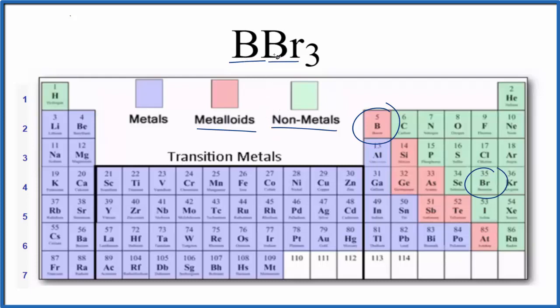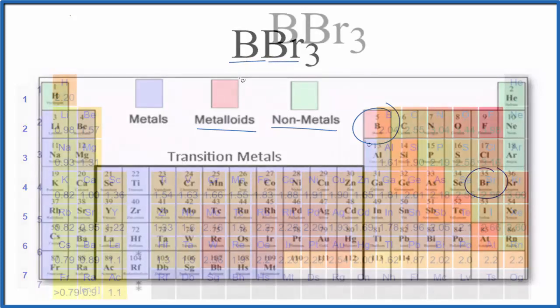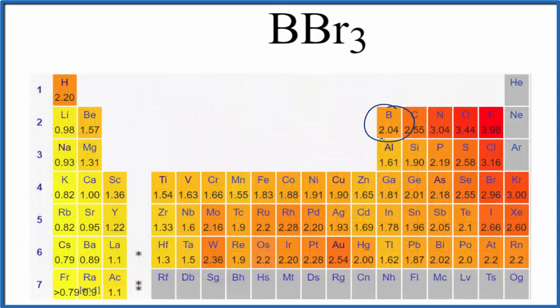Let's look at the difference in electronegativity between boron and bromine to see if that's the case. So here's boron, that's 2.04, and bromine 2.96. 2.96 minus 2.04, that's 0.92. That's the difference in electronegativity between boron and bromine.